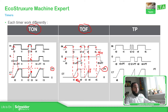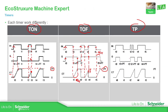The third timer is the T_P — timer pulse. When you activate the input, the output will be automatically on, but it will stay on only for the duration configured in the preset PT — just one time. It doesn't matter if you trigger the input too many times; it will execute the output only just one time.